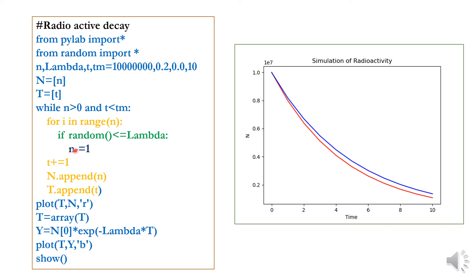When a nucleus decays, N becomes N minus 1. We append the updated N value and the corresponding time t to our storage lists. The simulated data is plotted in red color, so the simulated curve appears in red on the plot.